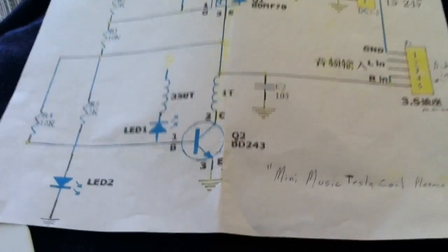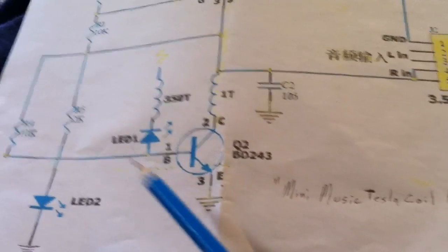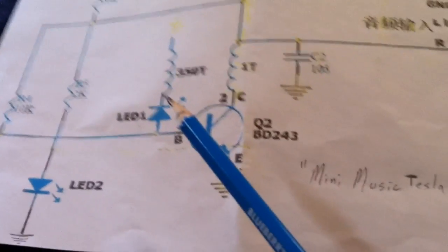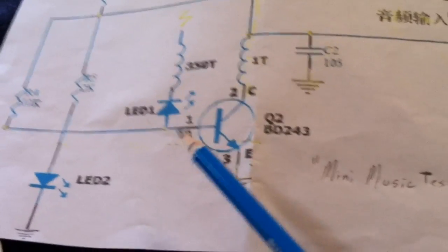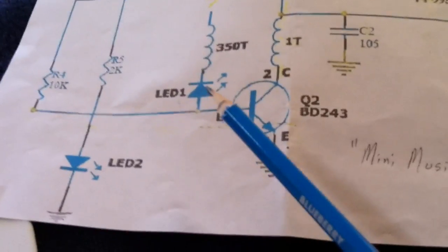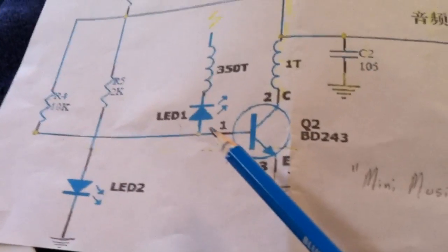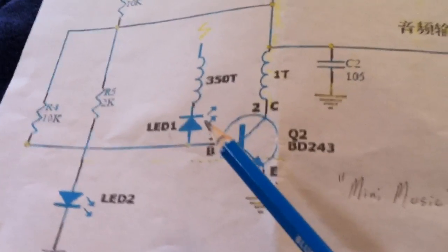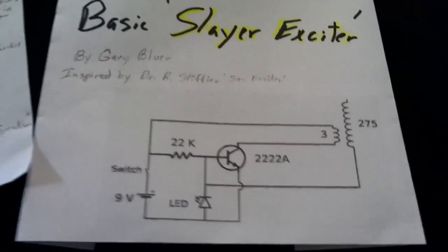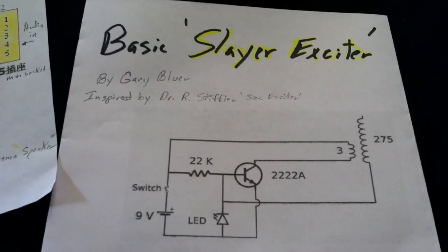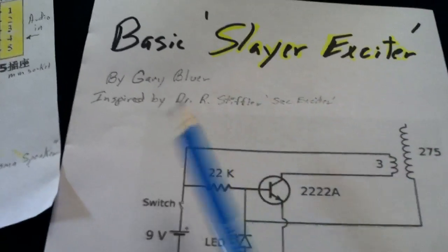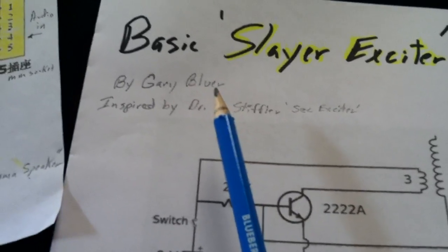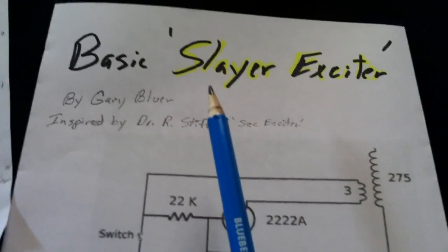And there's the circuit. But really this basic oscillator here is a Slayer Exciter. This LED I took out and I just have it wired right to here. It's supposed to go from the ground to here, and I don't know why they did it this way. But this is the basic Slayer Exciter, and this goes back years and years and years. And it was invented by Gary Bloor, and he goes by Slayer on YouTube.